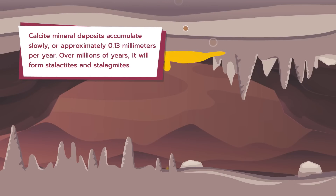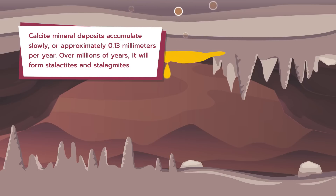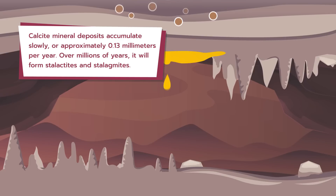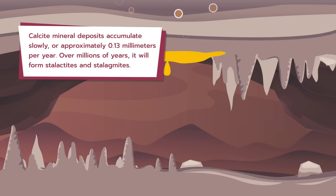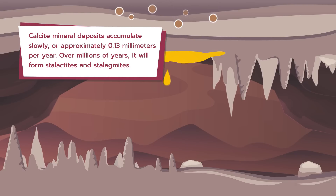Calcite mineral deposits accumulate slowly, at approximately 0.13 mm per year. Over millions of years, it will form stalactites and stalagmites.